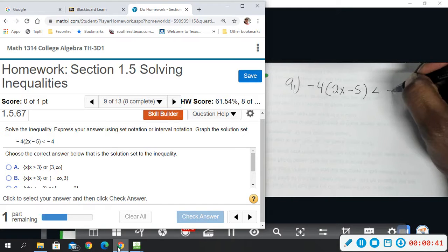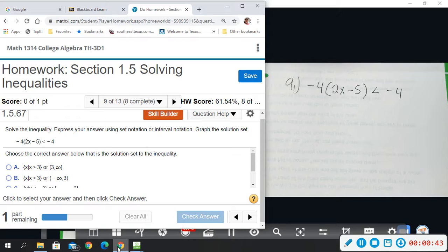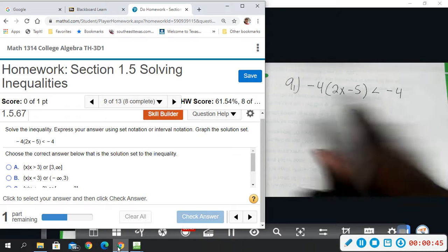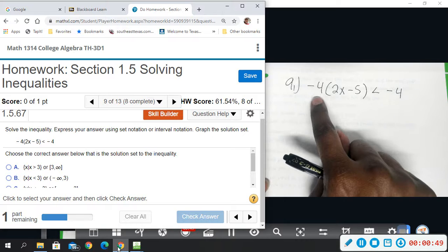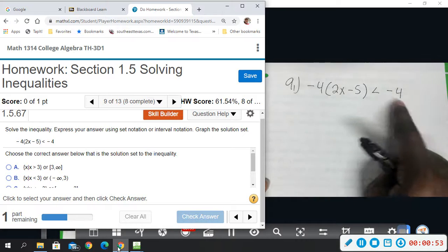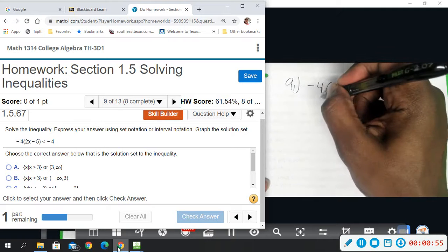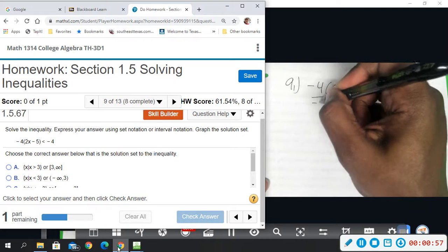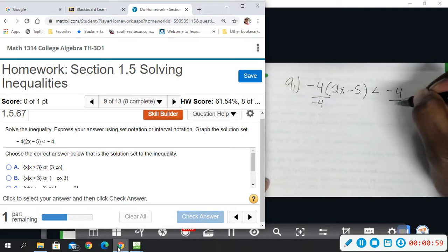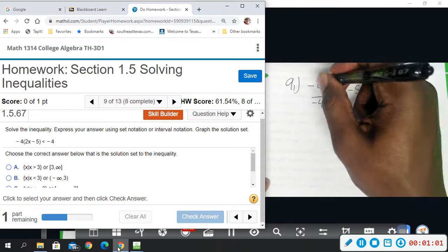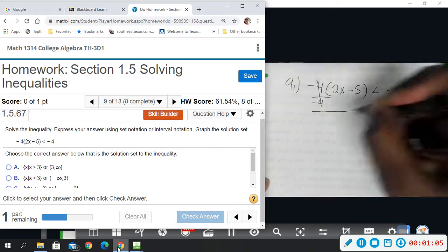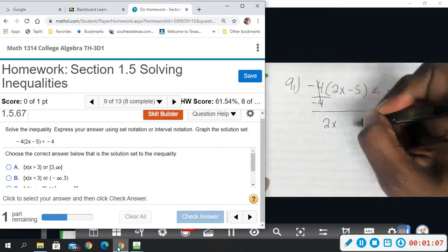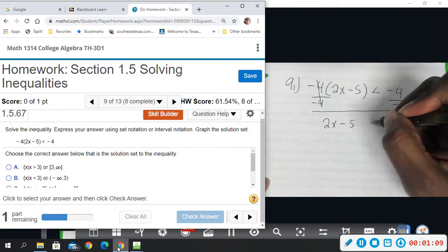Alright, we want to solve and get x by itself. You could distribute, but I would just divide off this negative 4 instead of having to distribute it. So divide off the negative 4, and it just divides and gives us 1. I'll bring down my 2x minus 5, less than...